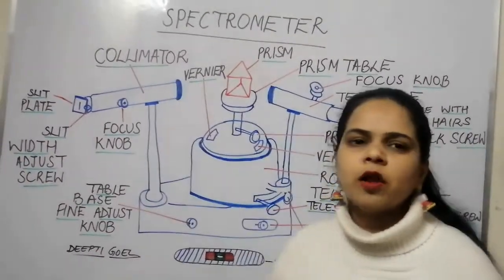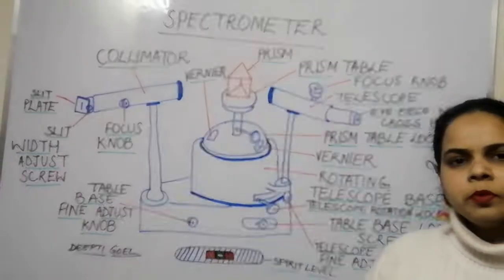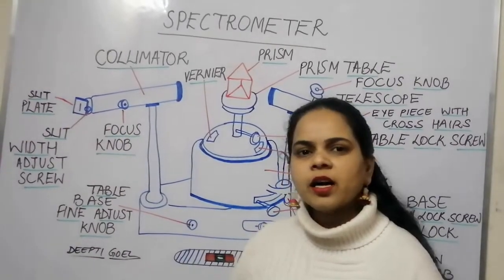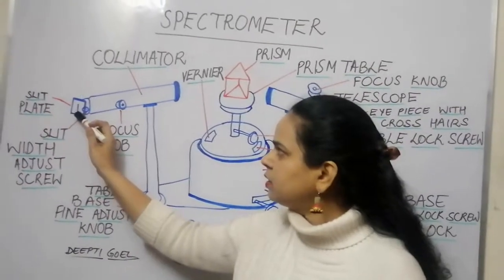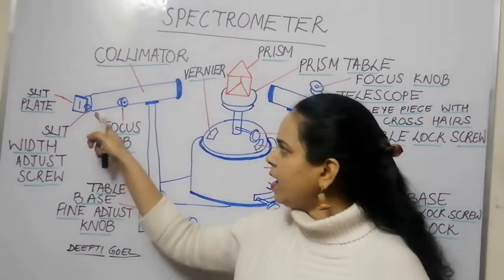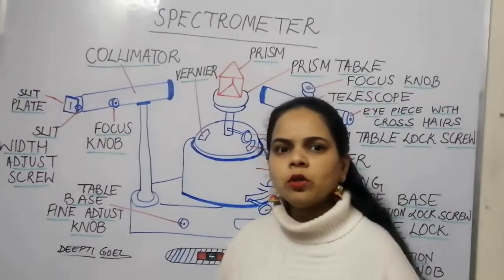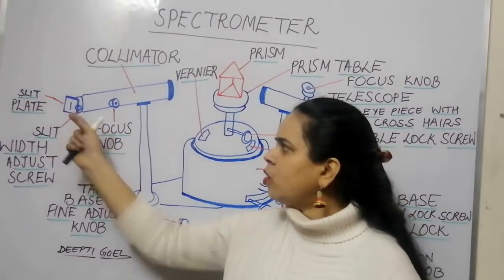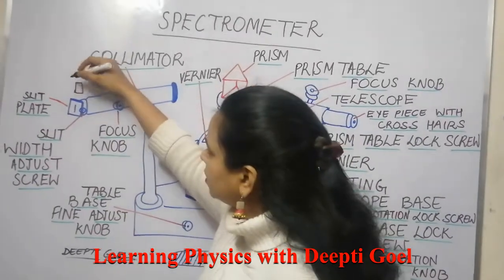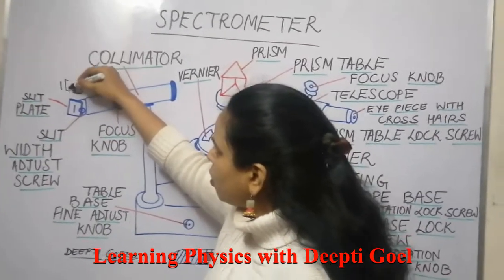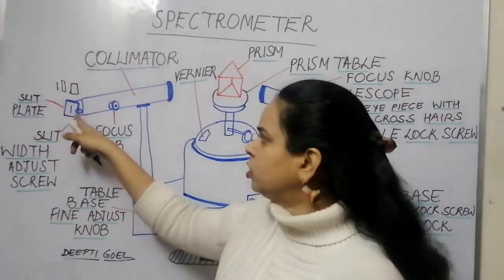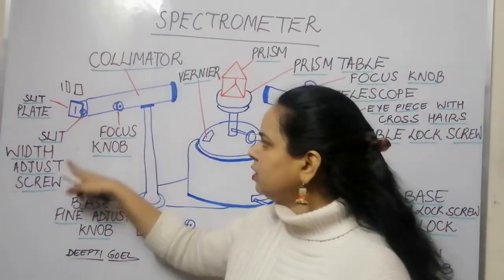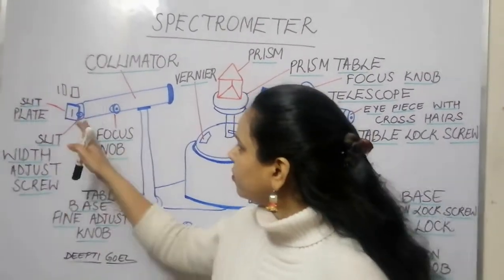The collimator is a tube consisting of two convex lenses. Attached to it is a slit plate with a rectangular slit and a slit width adjust screw. By opening or closing this screw, the slit width can be increased or decreased according to our requirement.